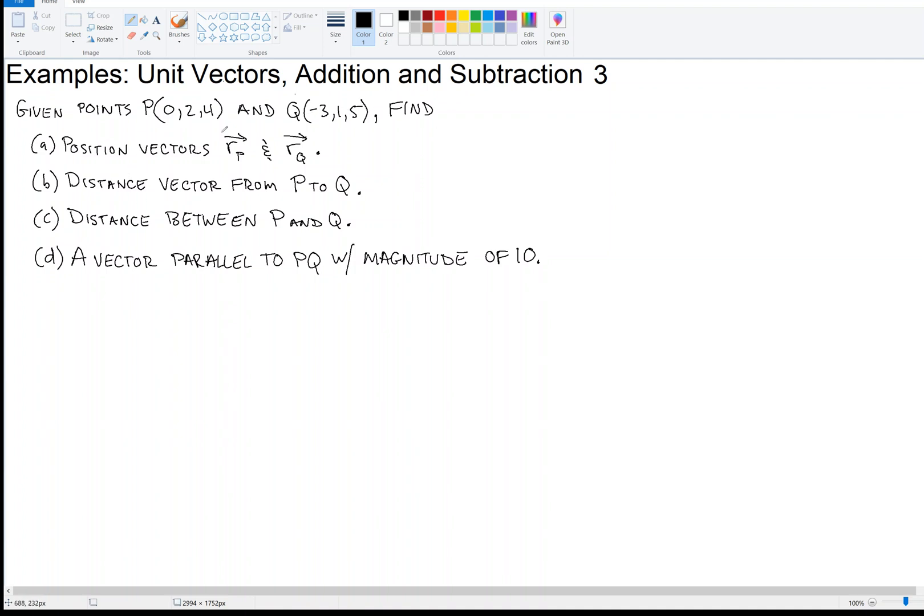Find all sorts of good things there. Okay, so first of all, A. We'll do A first, naturally. Position vectors R sub P and R sub Q. So if P is at 0, 2, 4, the coordinates,